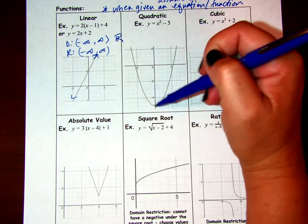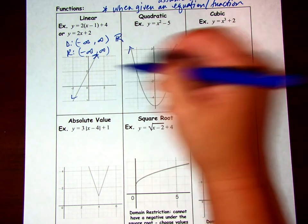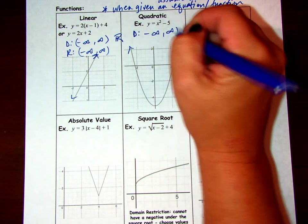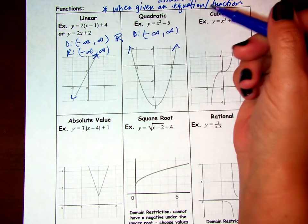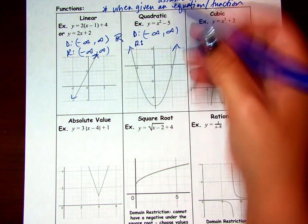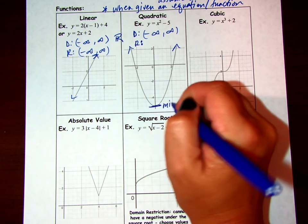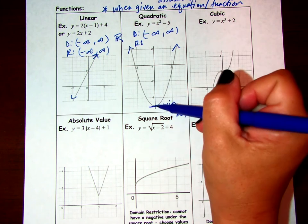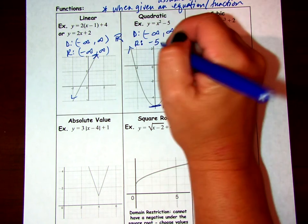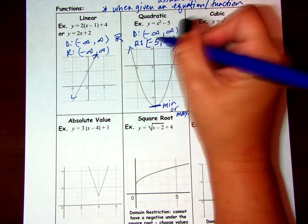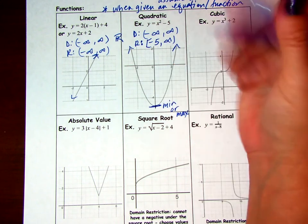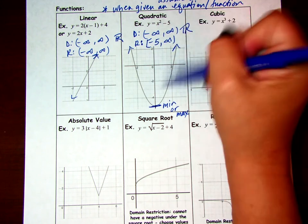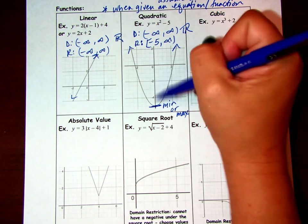Quadratic equations go forever left and forever right, so the domain of all quadratics is always negative infinity to infinity, or all real numbers. But the range of a quadratic is bound by the minimum or maximum, which is the vertex. In this case, the quadratic has a minimum at negative five, so the range goes from negative five to infinity with a closed bracket. We can also say all real numbers greater than or equal to negative five.